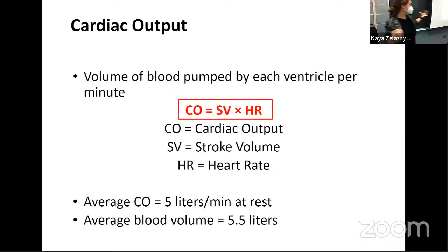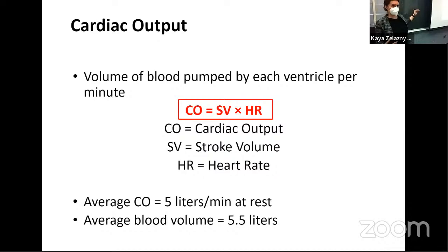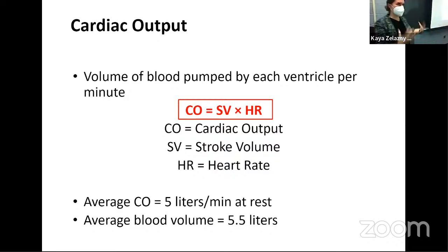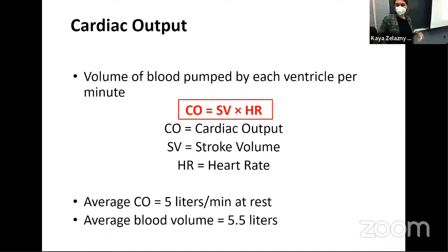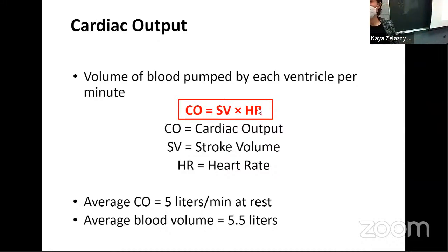But if you forget, you can kind of work backwards to find this equation, because all we're really saying here is that cardiac output is going to be the amount of blood going out to your body per minute. So when we think about how we would calculate that, it's just how much blood is your heart pumping every heartbeat times the number of heartbeats. The CO is our cardiac output, the SV is our stroke volume — that's how much blood is pumping out — and then the heart rate.